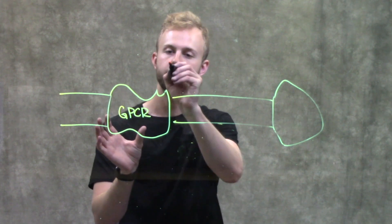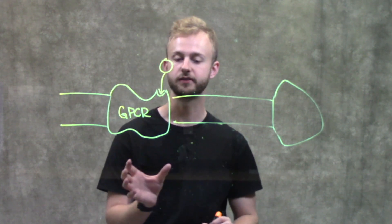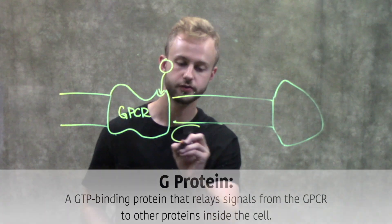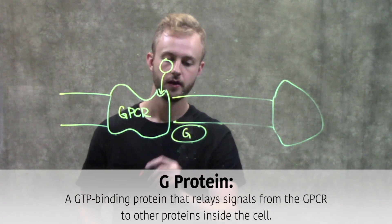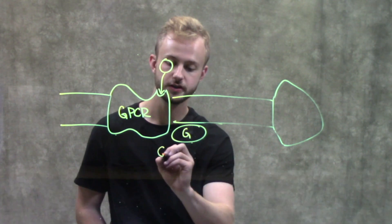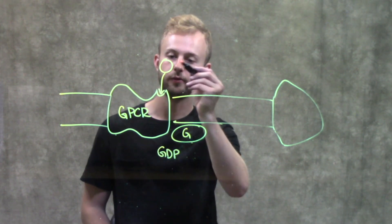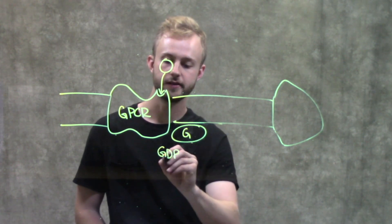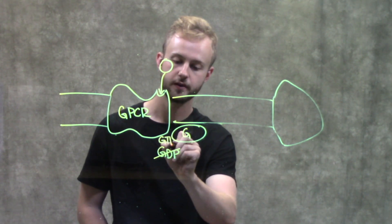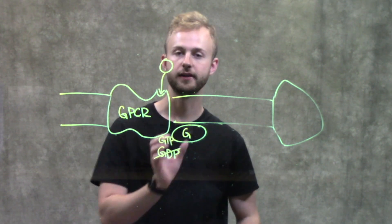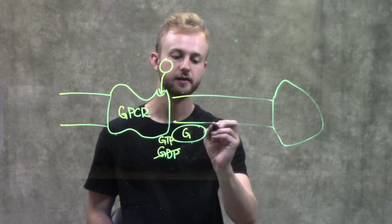When our ligand comes and binds to the GPCR, we have our G-protein on the inside of the cell, which had a GDP attached to it in its inactive form. But when this ligand binds, it's going to switch out the GDP for a GTP, and now it's activated.